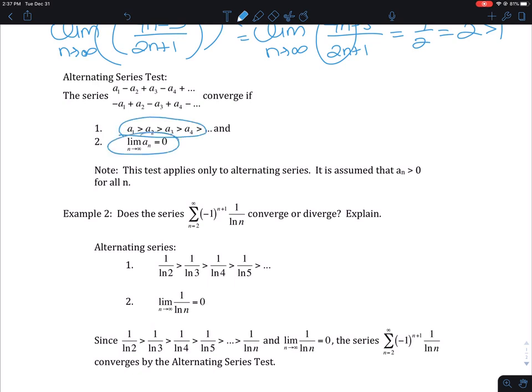And the limit as n approaches infinity has to equal 0. If both of those things are true, then the series converges, and you're ignoring the negative-positive switch.